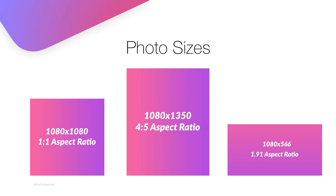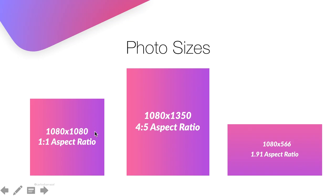The photo sizes posted on the Instagram feed include the square version, which has a 1:1 aspect ratio or 1080x1080 pixels. The portrait version has a 1080x1350 pixel size and an aspect ratio of 4:5. And lastly, the landscape version has a size of 1080x566 pixels, or an aspect ratio of 1.91. These are the recommended sizes for images — you can use bigger pixels.